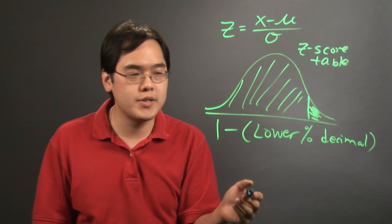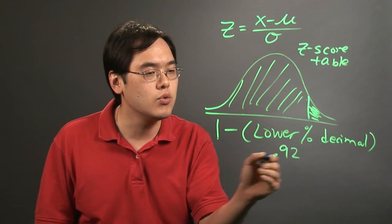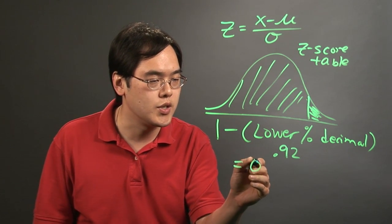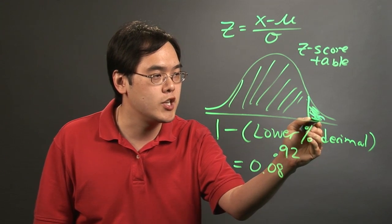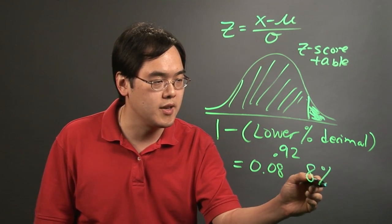For example, if your lower percentage decimal was 0.92, then you'll be subtracting 1 minus 0.92. That'll give you 0.08. So this upper percentage population is going to be 0.08 or 8%.